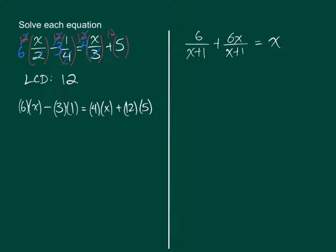And in this last term, 12 doesn't cancel with anything, so that 12 is still on the outside of this set of parentheses, and 5 is on the inside. So now I can simplify this to be 6X minus 3 equals 4X plus 60.